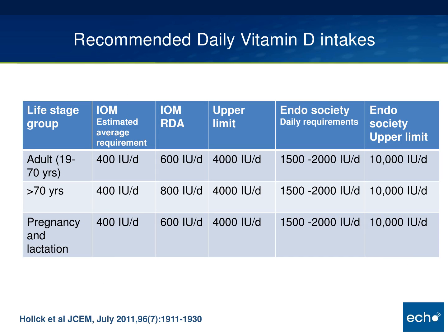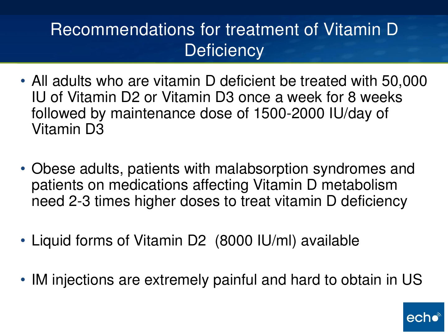The recommended daily vitamin D intake differs between what the Institute of Medicine recommends and what the Endocrine Society recommends as daily requirements and upper limits. Most studies looking at skeletal health use supplementation of 1,000 to 2,000 IUs per day of vitamin D. All adults with vitamin D deficiency can be treated with 50,000 IUs of vitamin D2 or D3 once a week for eight weeks, followed by a maintenance dose of 1,500 to 2,000 IUs per day of vitamin D3.